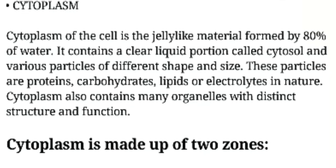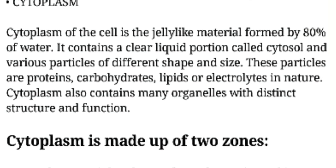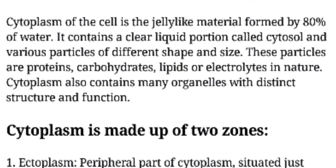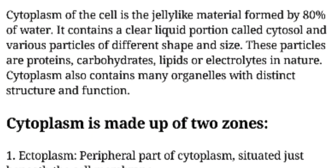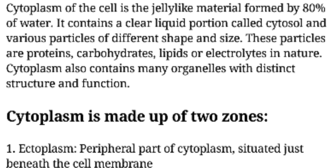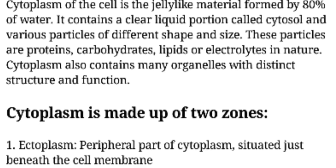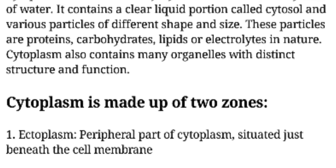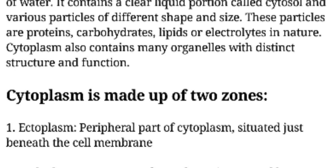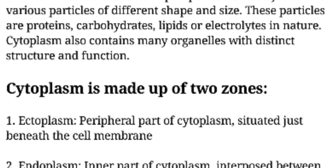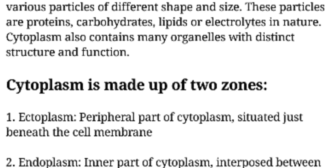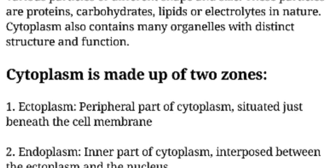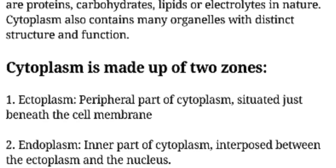Cytoplasm. Cytoplasm of the cell is the jelly-like material formed by 80% of water. It contains a clear liquid portion called cytosol and various particles of different shape and size. These particles are proteins, carbohydrates, lipids, or electrolytes in nature. Cytoplasm also contains many organelles with distinct structure and function.